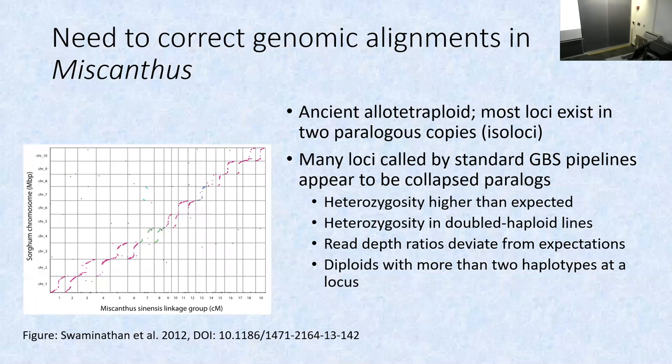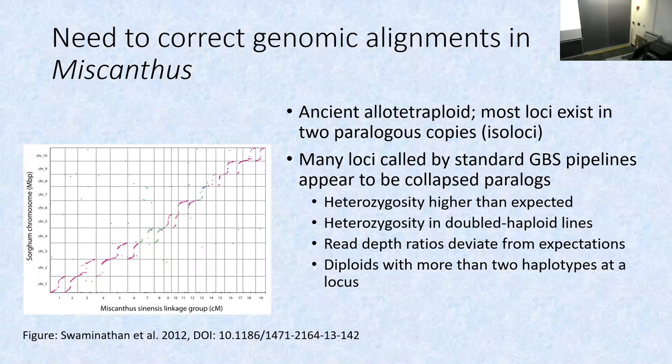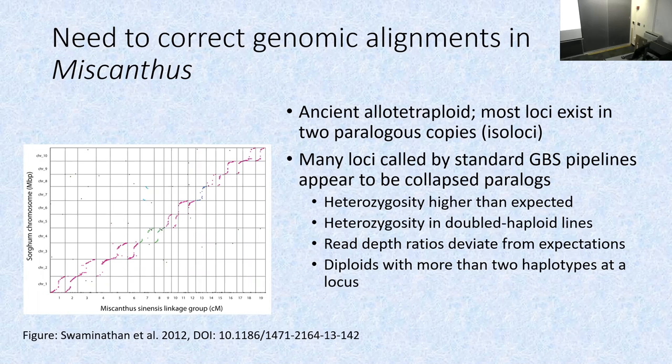I'm going to talk about a new method for correcting genome alignment. Even the diploid miscanthus is actually an ancient allotetraploid — for each ancestral grass chromosome, there are two chromosomes in miscanthus. This not only made getting a reference genome very difficult, but it means we have a lot of uncertainty in alignments to that reference genome. We can see evidence in our sequence read depths that some loci aren't really Mendelian, suggesting misaligned sequence tags.